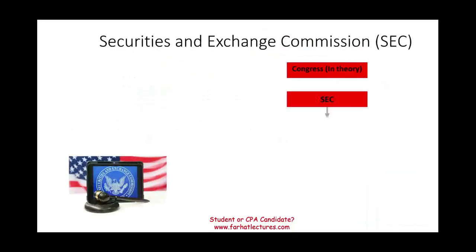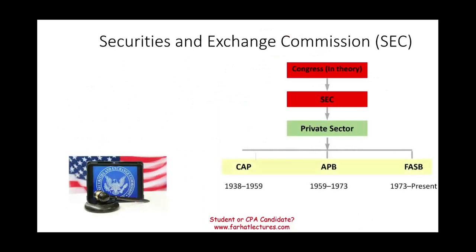In theory, the U.S. Congress can create accounting rules and set GAAP, but they don't do that. They assign this process to the SEC — the Securities and Exchange Commission — which is a government entity. And the SEC also delegates this process further to the private sector.